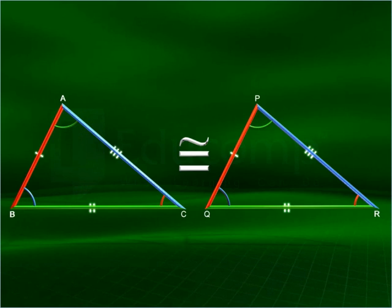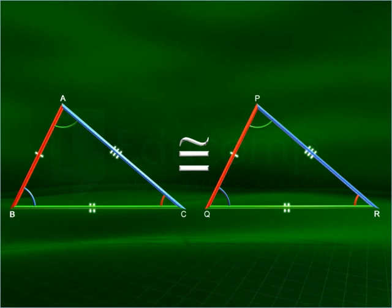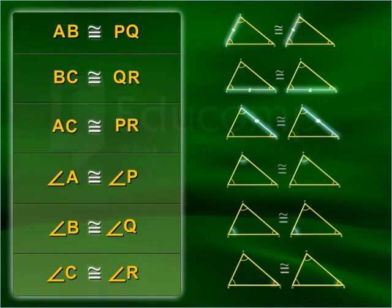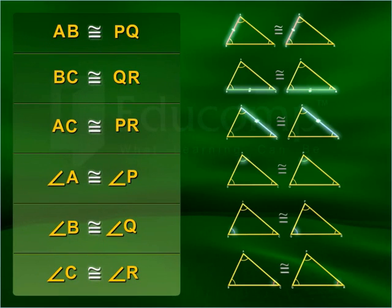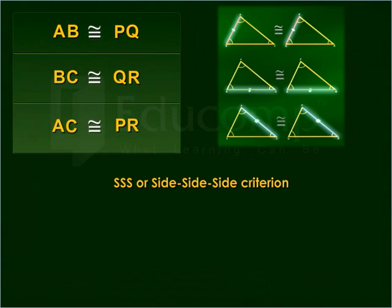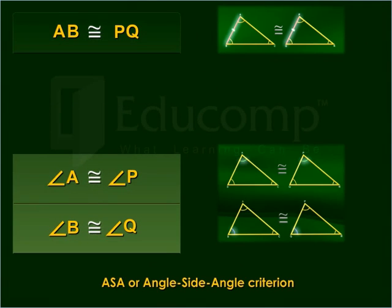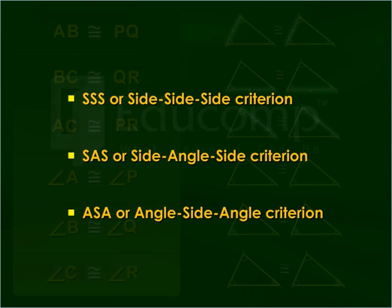You have to be careful when comparing corresponding parts of triangles. Triangle ABC is congruent to triangle PQR, but triangle ACB is not congruent to triangle PQR. Here are six possible conditions to determine the congruence of two triangles. Out of these six conditions, three are sufficient to determine that two triangles are congruent. These are called the criteria for two triangles to be congruent. We'll now examine these criteria for the congruence of triangles.